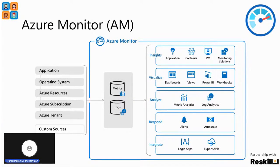If you look at the screen, we have three parts of Azure Monitoring Services. On the left side you can see data sources: application, operating system, Azure resources, subscriptions, and tenant. In the middle there are two boxes depicting metrics and logs — these are the data stores where collected data can be stored in either metrics or logs format. On the right side we can see insights, visualize, analyze, respond, and integrate. We will go through each one.